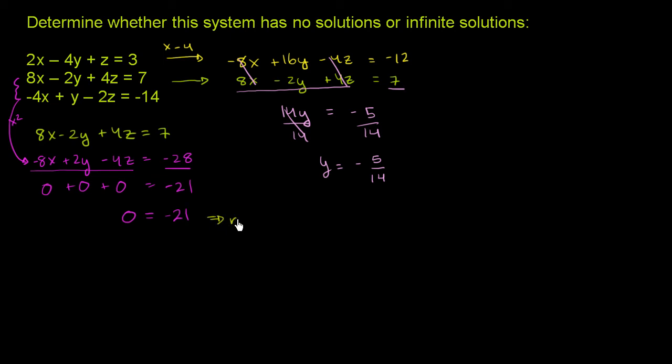This obviously can never happen. So we end up with no solution. If we got something like 0 is equal to 0, or 21 is equal to 21, then it would mean that we have the same exact planes, which would mean we have an infinite number of solutions.